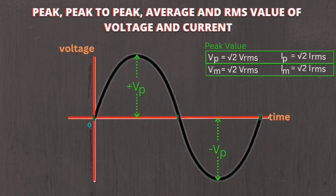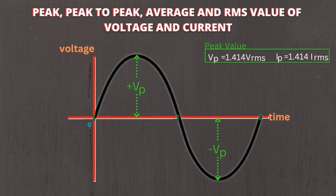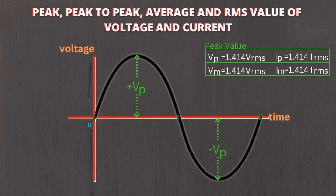For the current, I-sub-P equals square root of 2 times I-RMS, or I-sub-M equals square root of 2 times I-RMS. This can also be written as V-sub-P equals 1.414 times V-RMS, V-sub-M equals 1.414 times V-RMS, I-sub-P equals 1.414 times I-RMS, and I-sub-M equals 1.414 times I-RMS. In my last video I already discussed how to solve RMS value when the peak voltage is given.